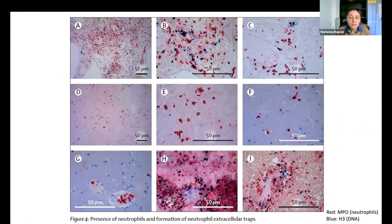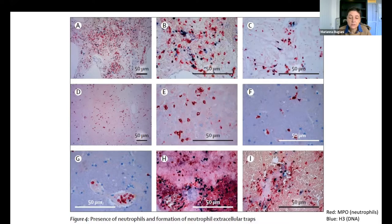If you look at the stainings — these are all brain stainings — you have a co-existence of red neutrophils with the histone tree in blue: spitted-out DNA that in the end results in the formation of a thrombus.